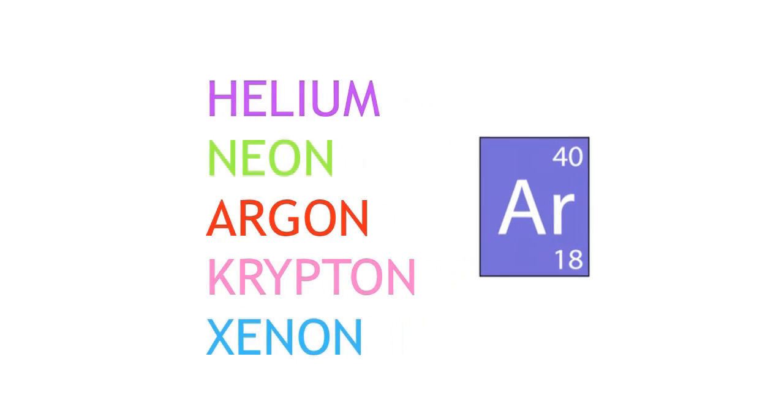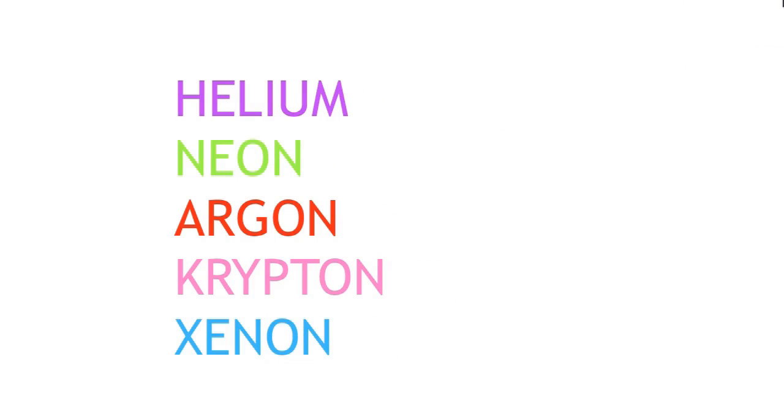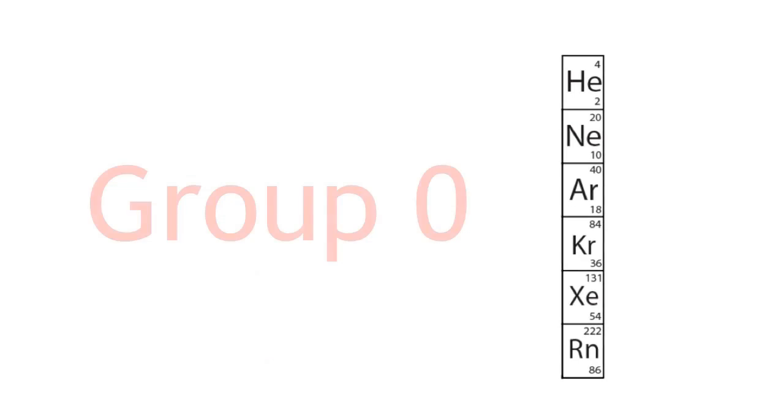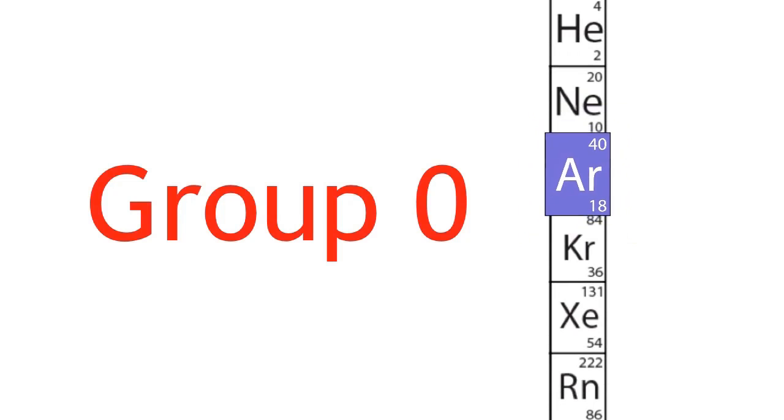When argon was discovered, it didn't fit into Mendeleev's table. It was put into a new group, Group Zero, and over the next few years, other members of this group were discovered.